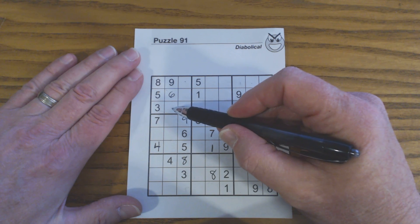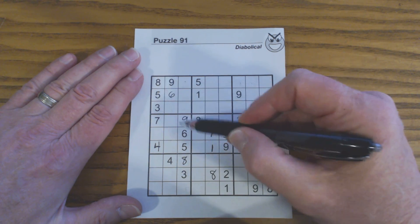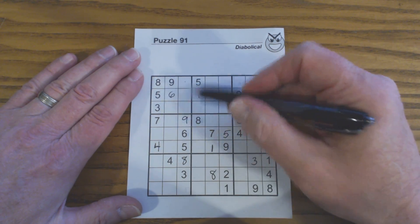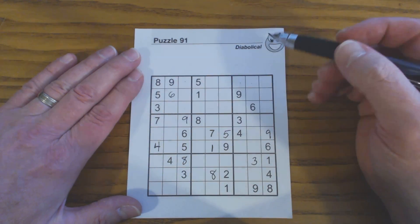We can narrow this one down by looking at the options here. We've got four numbers that are missing here and four numbers that are missing here, and they're the same numbers.